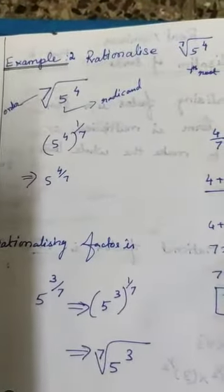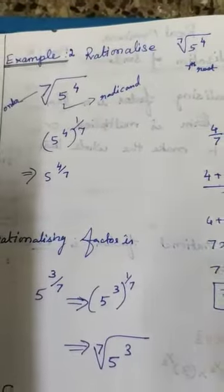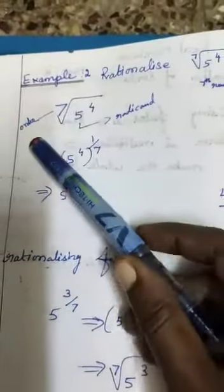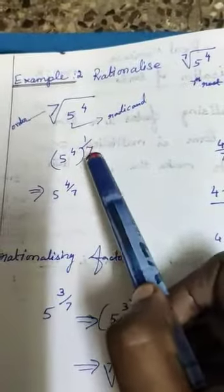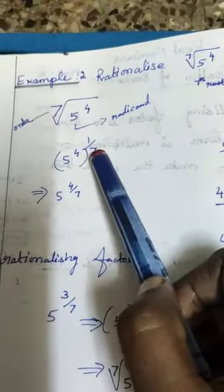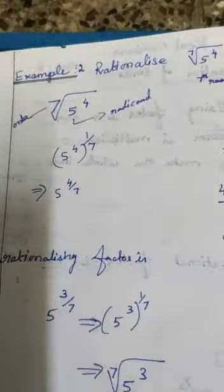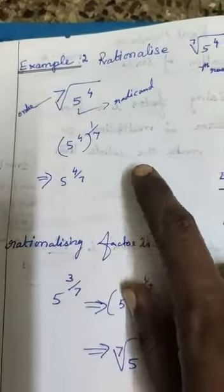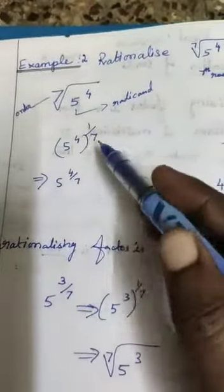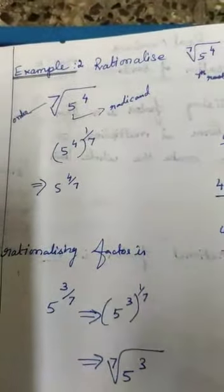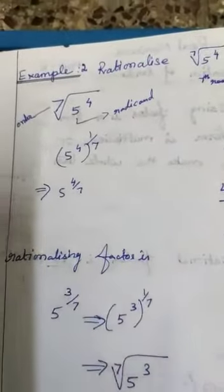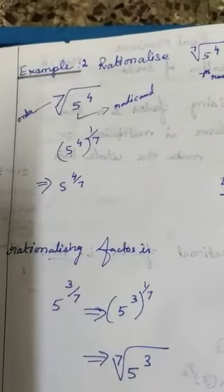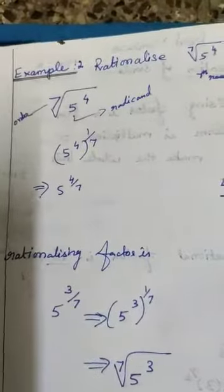Here they're giving radical power 5 over 4. For these model sums, first of all we take the order and make it as a power using index formula. Index form is power, right? We write 1 by 7 and then multiply using laws of exponents.